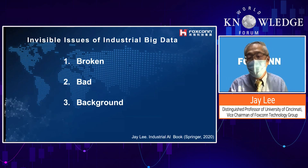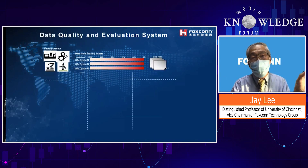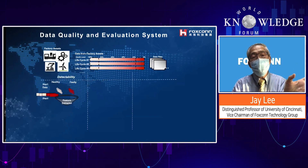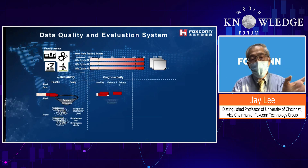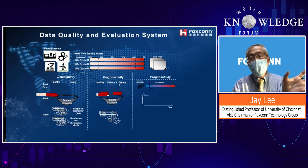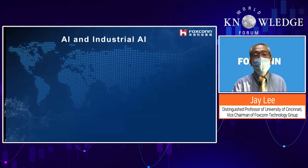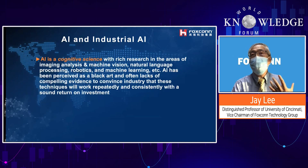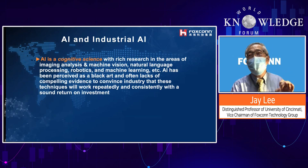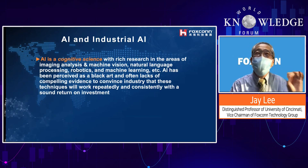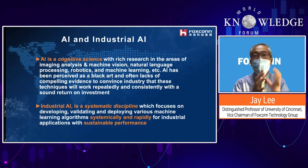Like blood donation — blood is useful, but if you have HIV or another disease the blood is not usable. Data quality is very important. When we collect data from the field, we first evaluate whether the data can be used to detect something, then whether it can diagnose, then predict. We do analysis to make sure data quality is good and useful. AI is a cognitive science that's been there a long time with many successes, but it also has barriers. Industrial AI needs a systematic approach.